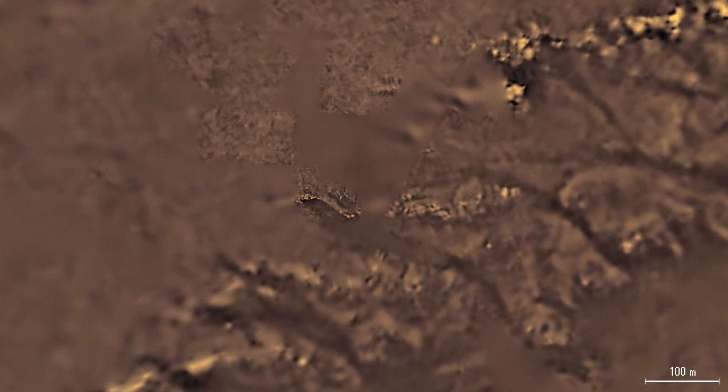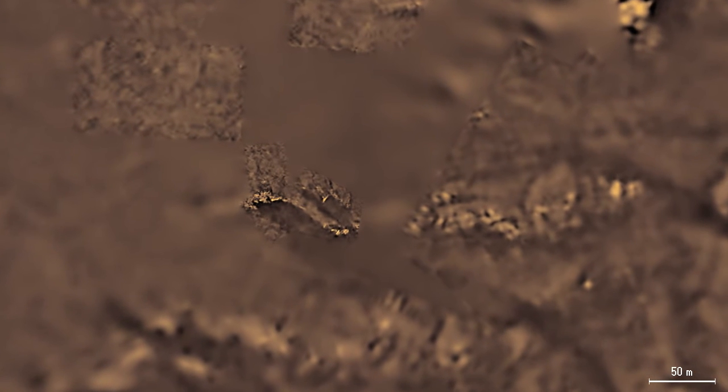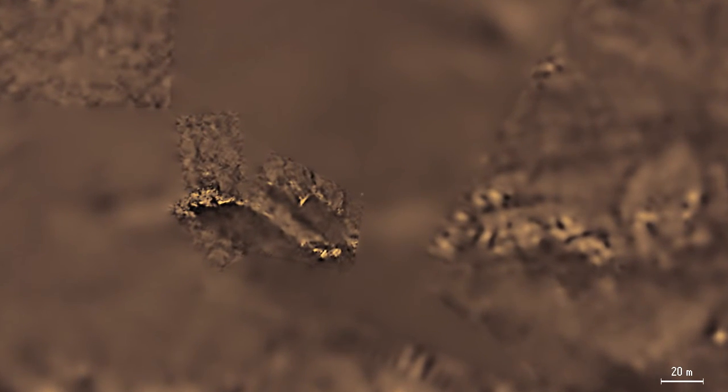Most of Titan's surface is covered by dark organics that are produced in the atmosphere and slowly settle down. The bright spots may be exposed patches of water ice.